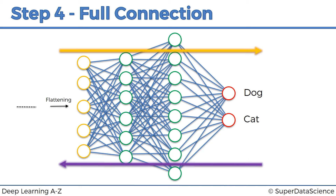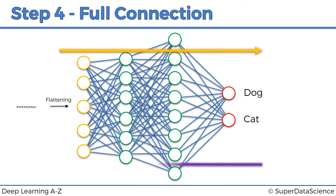The feature detectors are adjusted, the weights are adjusted, and this whole process happens again. Then again the error is backpropagated, and this keeps going on and on. That's how our network is optimized and trains on the data. The data goes through the whole network from start to end, then the error is calculated and backpropagated — same story as with ANNs, just a bit longer because of the first three steps.